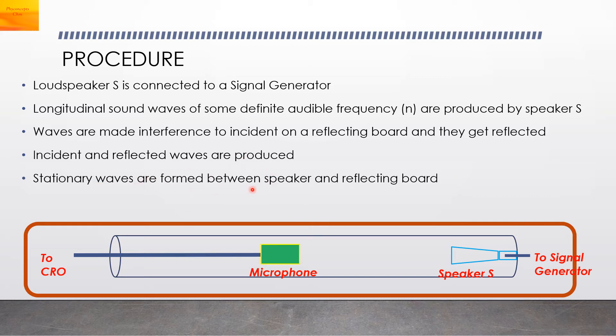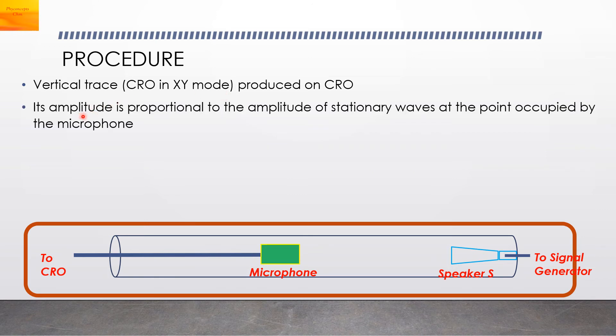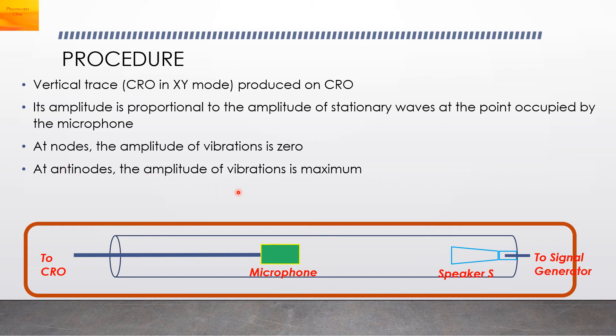Stationary waves are formed between the speaker and the reflecting board. The microphone M converts the stationary waves into electrical signals which are fed to the CRO. A vertical trace is produced on the CRO. We can fix the CRO in the XY mode so that you will get a straight line. From that we can understand the amplitude of the stationary waves at the point occupied by the microphone. At the nodes, the amplitude of the vibrations is zero. At the anti-nodes, the amplitude of vibrations is maximum.